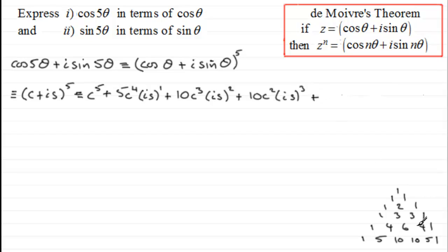Next term would be 5c·(is)^4. And then the final term would be one lot of c^0, that's just going to be 1, and then (is)^5. Okay, so there's your terms for the binomial expansion of that.